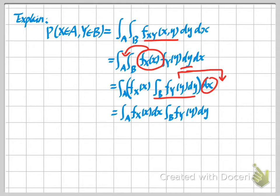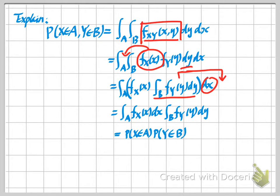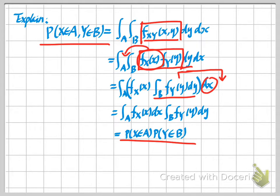So we get an equation where the inner integral with respect to y gives a number — since it's a function of y only. Then when we integrate with respect to x, we can treat that inner integral as a constant. The result is a product of two integrals: the first is the probability of x in A, and the second is the probability of y in B. So if f(x,y) equals the product of the two marginal PDFs, we recover requirement 2 — the probability of the intersection equals the product of the individual probabilities.